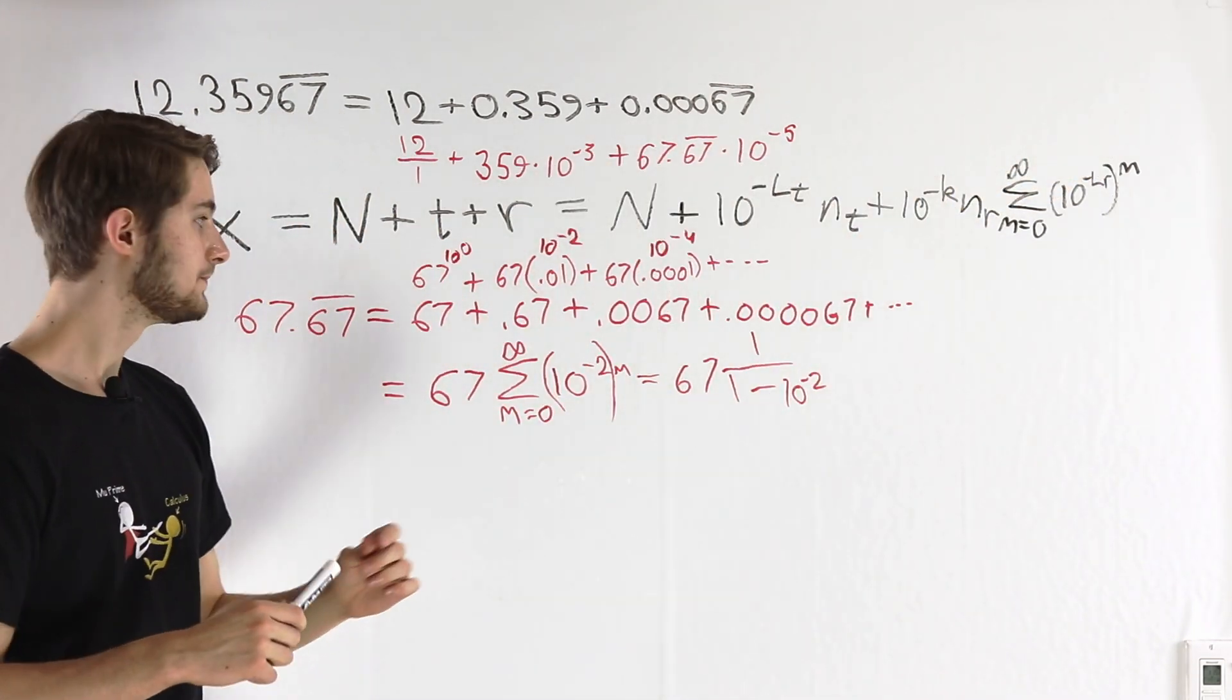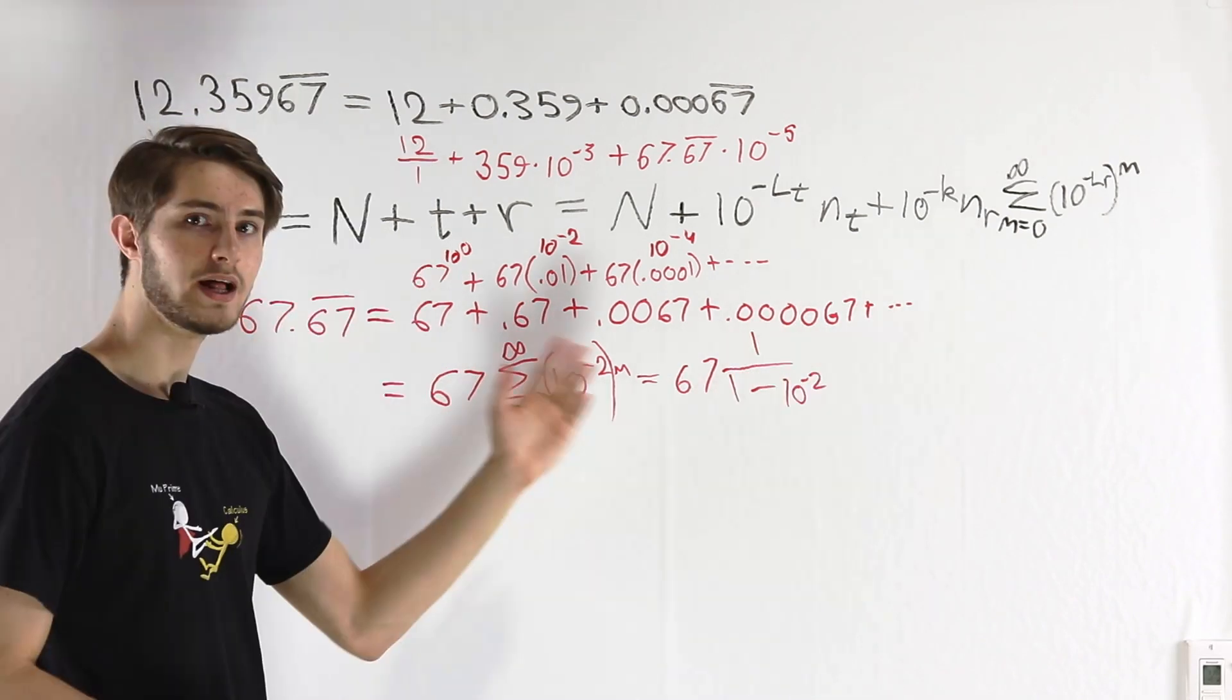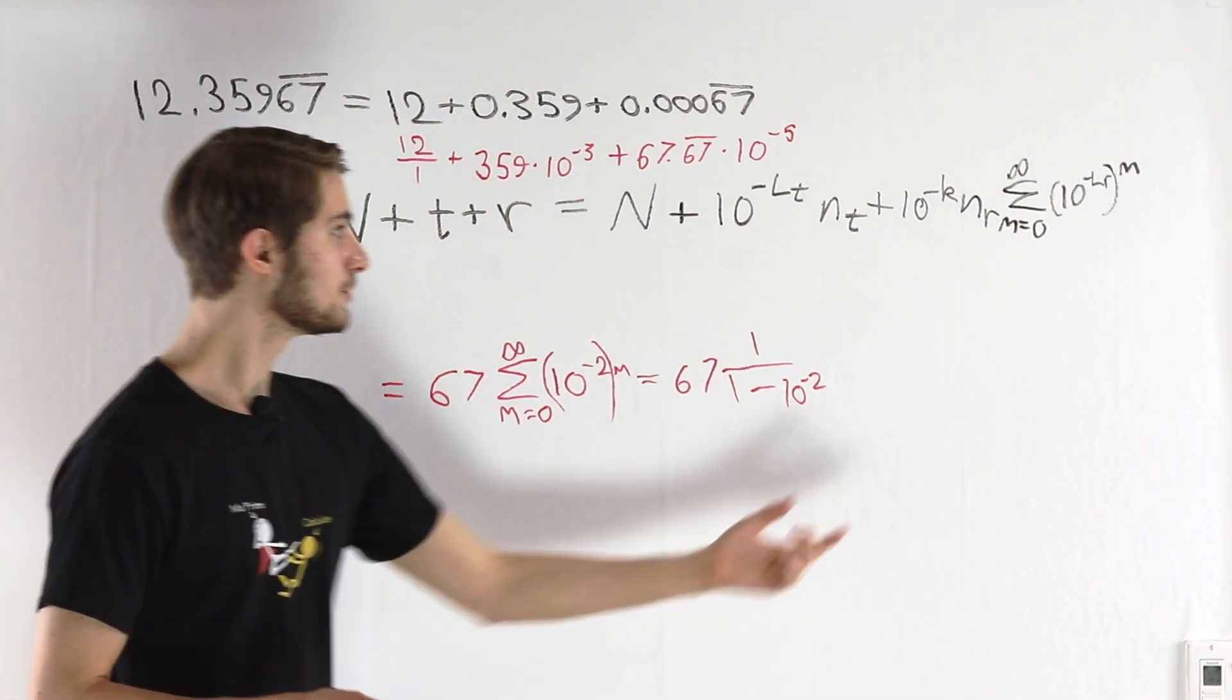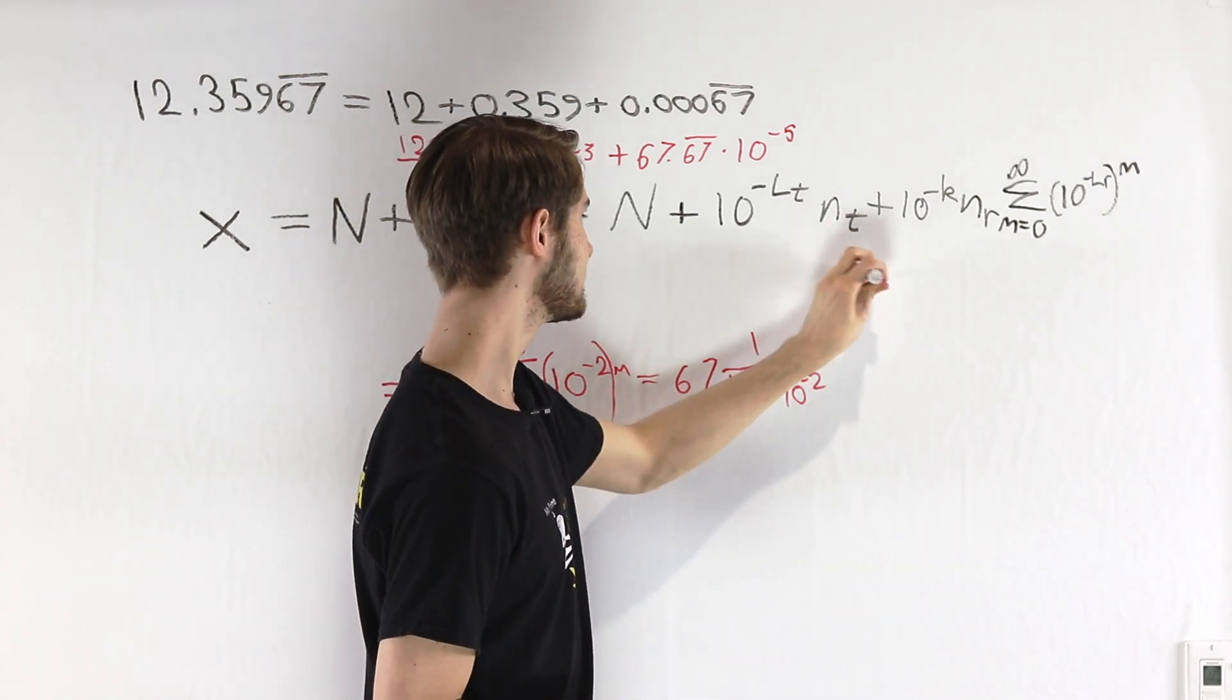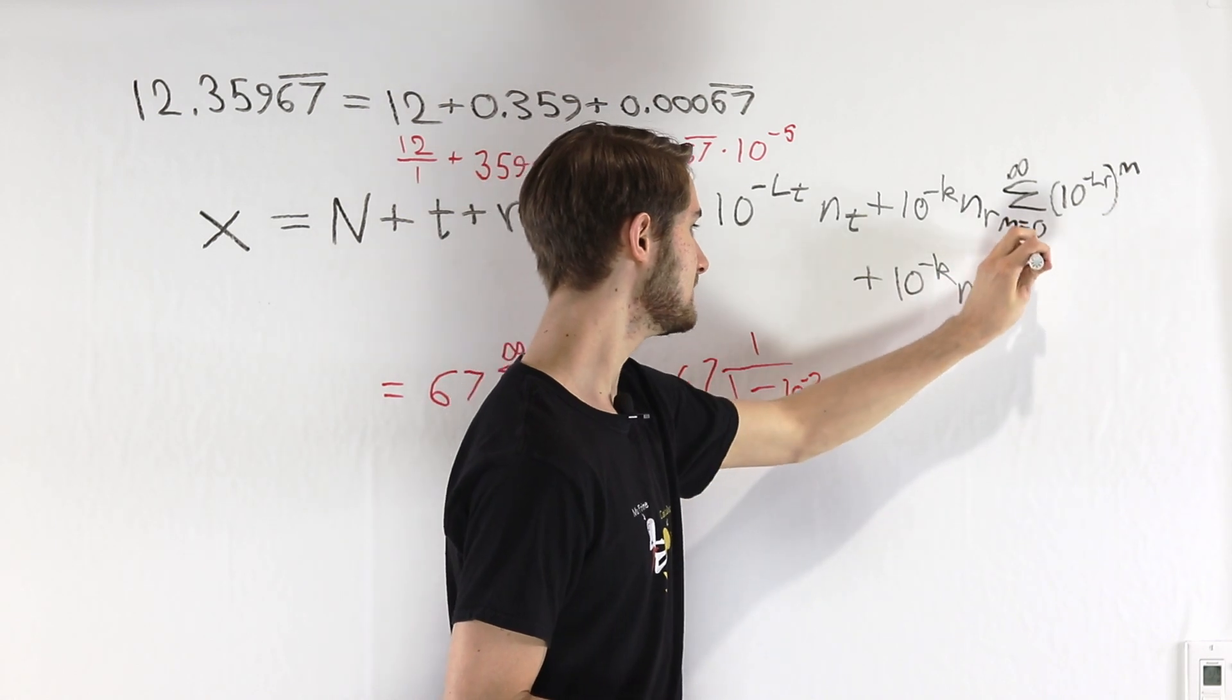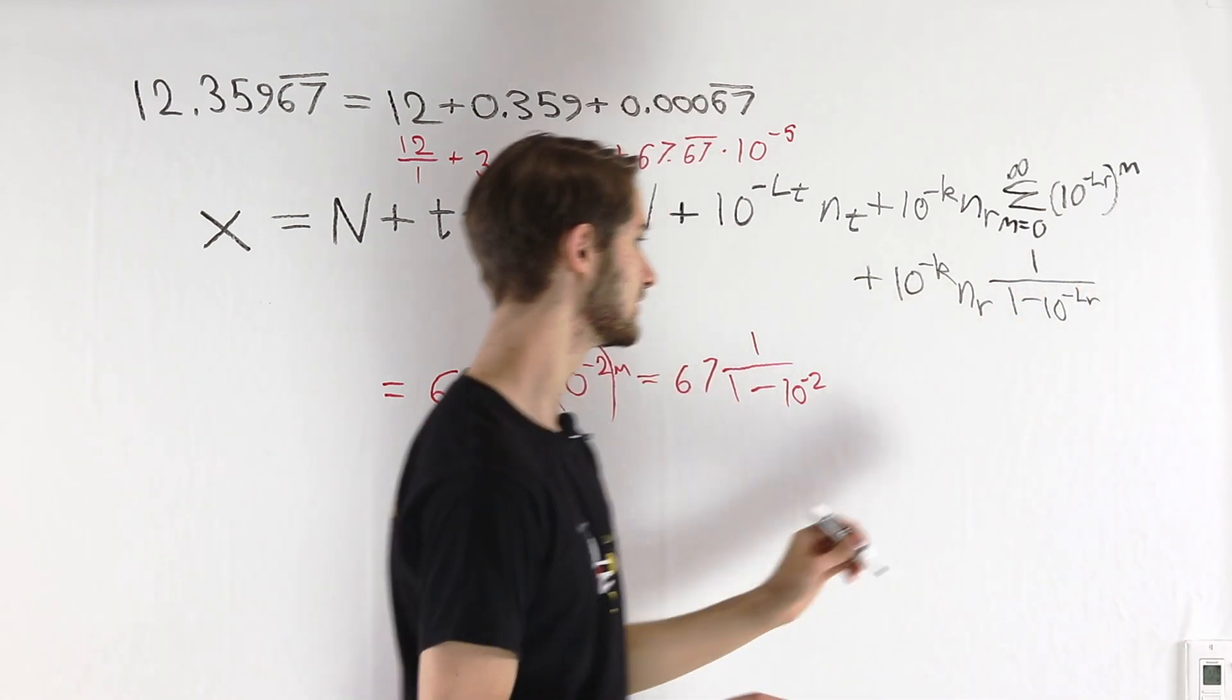And every time we add another instance of that repeating sequence, it's going to be shifted over l_r places to the right. So we multiply by 10 to the negative l_r. And just like before, at the end here we have a geometric series. And therefore we can evaluate this as 10 to the negative k times our repeating decimal digits n_r times 1 over 1 minus that common ratio 10 to the negative l_r.